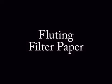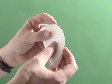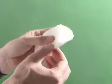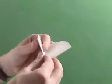This video shows how to make fluted filter paper for rapidly filtering hot solutions. We start by folding a piece of 12.5 cm filter paper in order to make a series of creases that we'll use as guidelines later on.